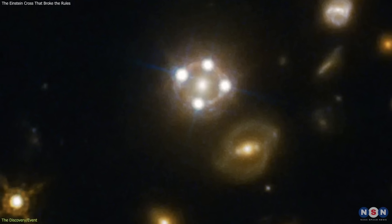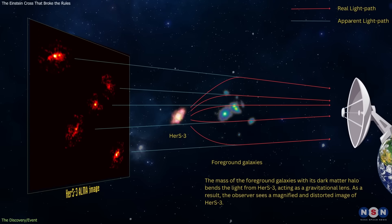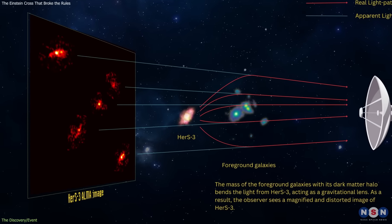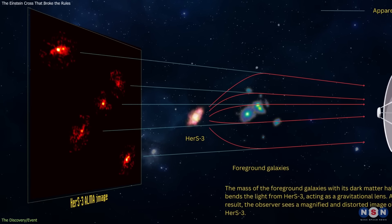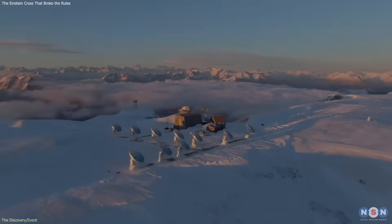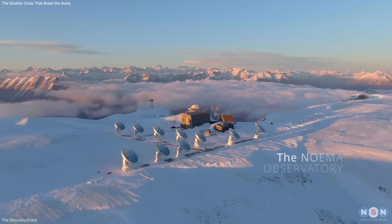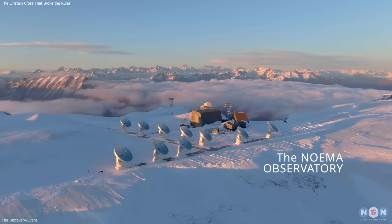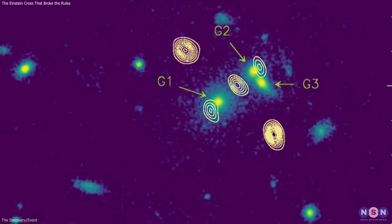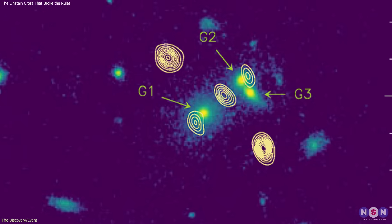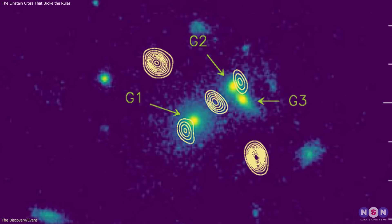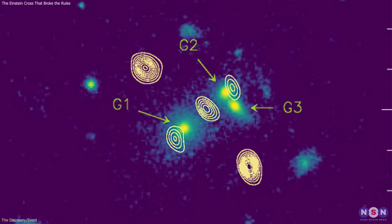These systems are rare but well understood, and they serve as powerful tools for studying both the background and the foreground galaxies. When astronomer Pierre Cox examined data from the NOEMA radio telescope array in France, he saw what looked like a typical Einstein cross. But in addition to the four expected images, there was a bright point in the center.